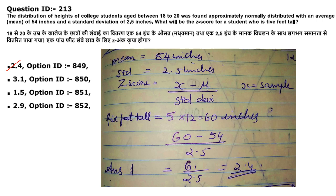Next: heights of college students aged 18–20 are normally distributed with a mean of 54 inches and standard deviation of 2.5 inches. What is the z-score for a student who is 5 feet tall? The z-score formula is (X minus μ) divided by standard deviation. Convert 5 feet to 60 inches. So z = (60 − 54) / 2.5 = 2.4. Answer is option A.